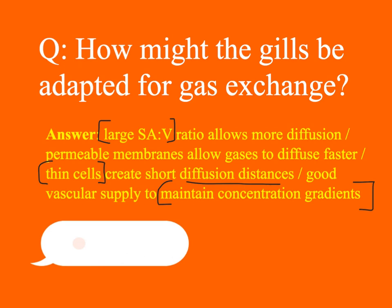One particular exam point to raise: when asked to describe how a gill structure is adapted for its function, a lot of students just say there are gill filaments or gill lamellae, so there's a large surface area — and that is true. But what you need to say is that there are many gill filaments, which you're going to see in the picture that's just about to come up.